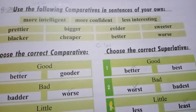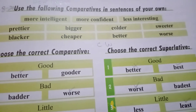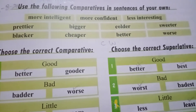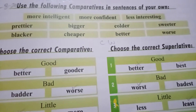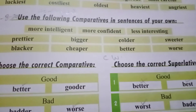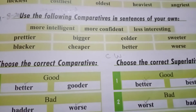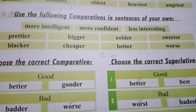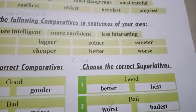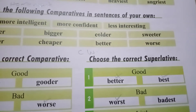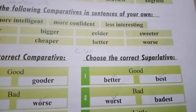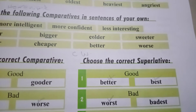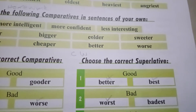For example, if we say 'prettier,' you will not say only prettier — you will say 'prettier than.' For example, if we make a sentence with prettier, we say: Mary is prettier than Asma. Then 'bigger' — if we make a sentence with bigger, we say: my pencil is bigger than yours. And if we make a sentence with 'colder': this room is colder than the other. And with 'sweeter': this dish is sweeter than that one.